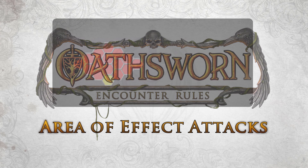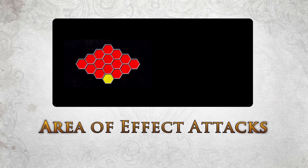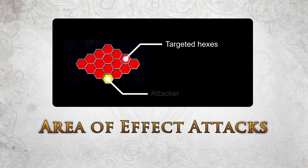If an attack includes a diagram of red hexes, it's considered to be an Area of Effect attack, or AoE for short. The red hexes will be targeted by the attack, and the yellow hex indicates the position of the attacker. Unless stated otherwise, AoE attacks affect all characters, whether friend or foe.